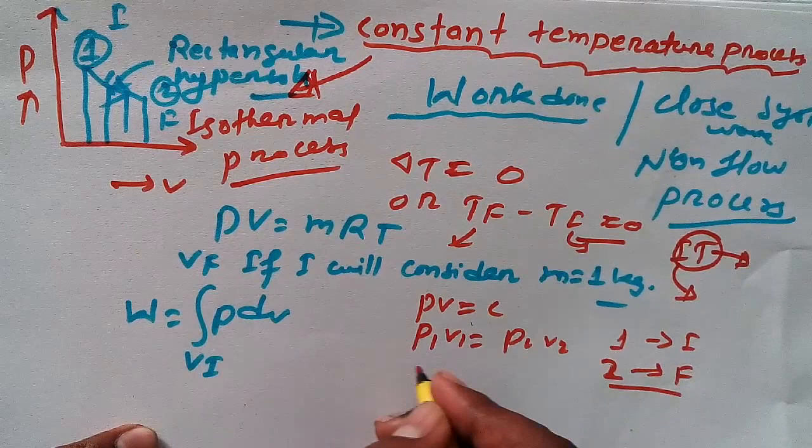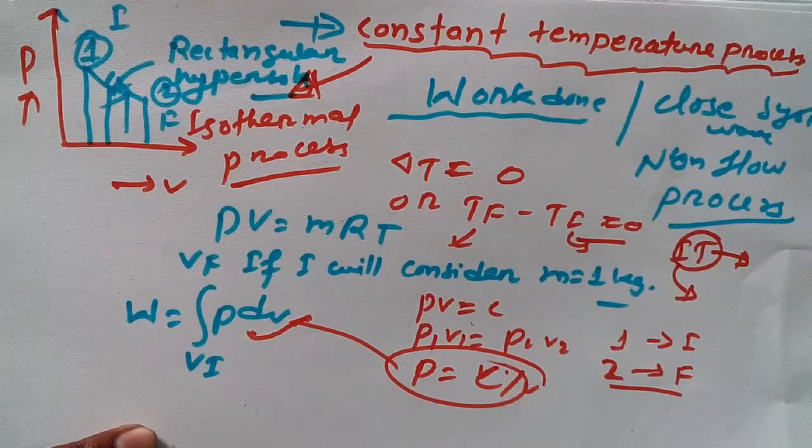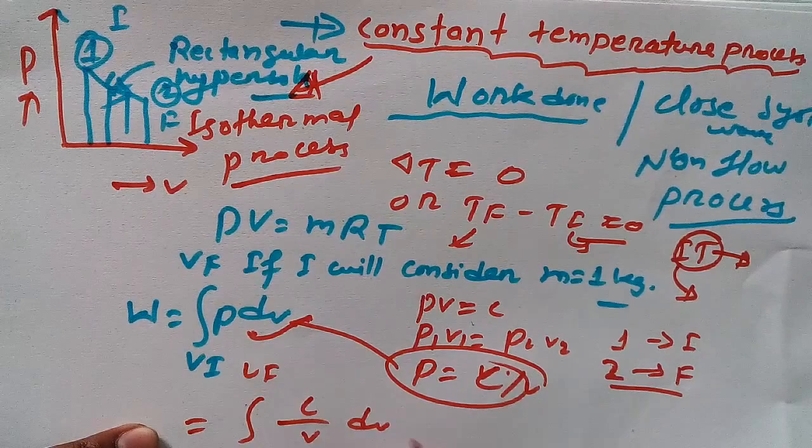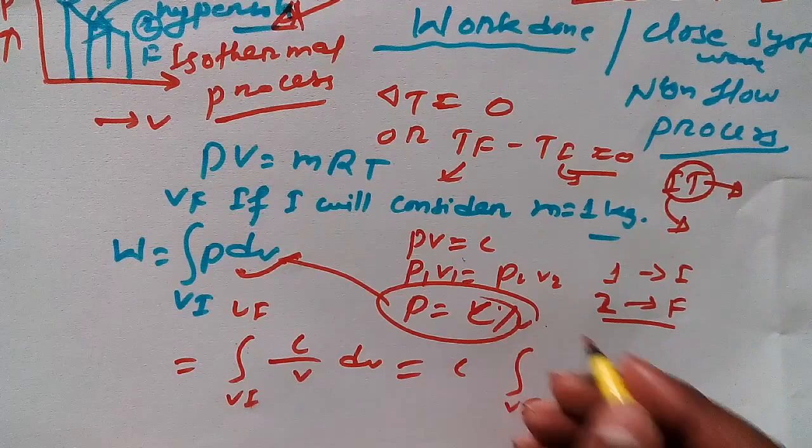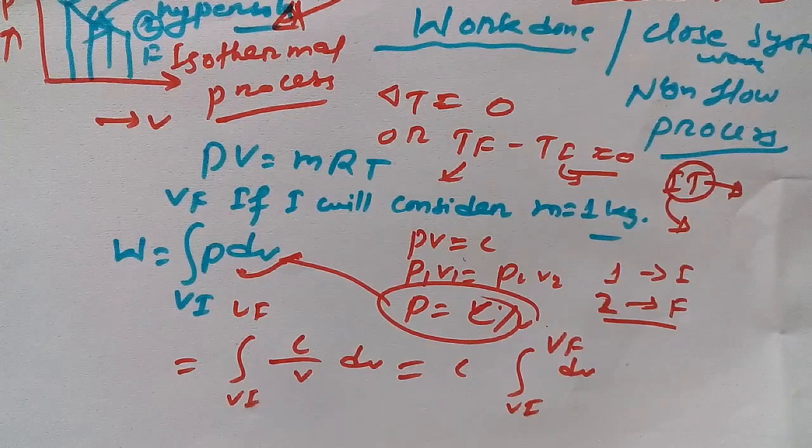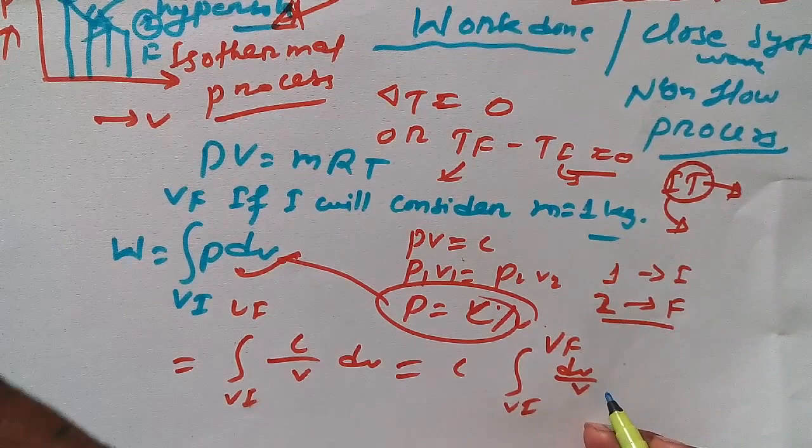Now let me share with you how to do here. So we know P is equal to C upon V, so just put this value here. Now VI to VF: C upon V dV. Got it? Now see, let's just take C out because it is constant, so VI to VF dV upon V.